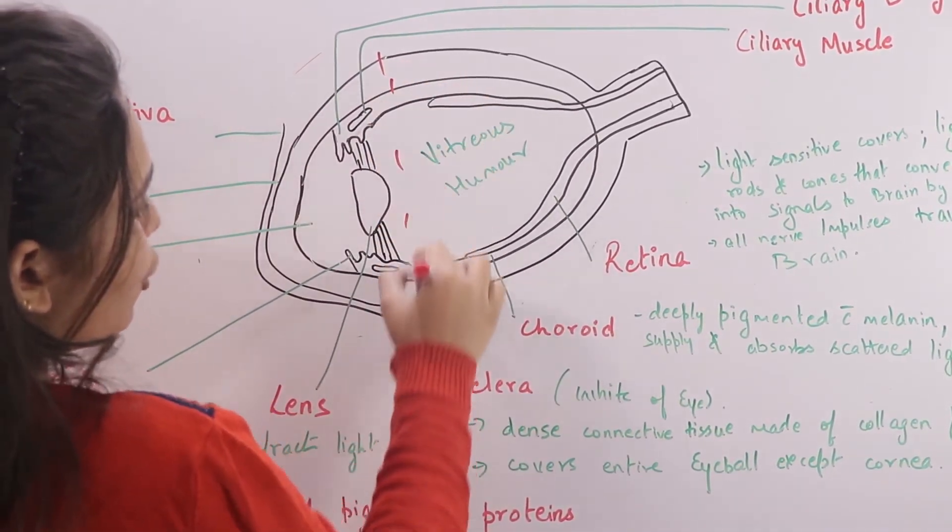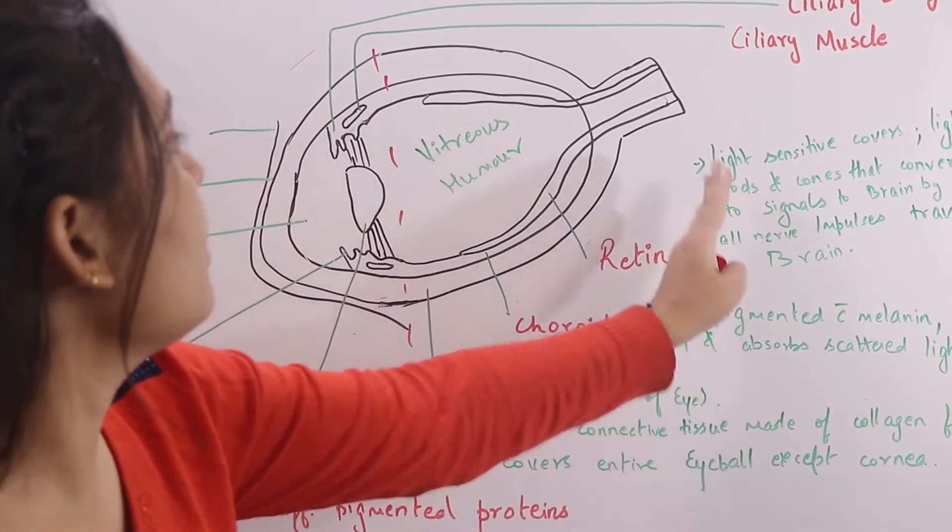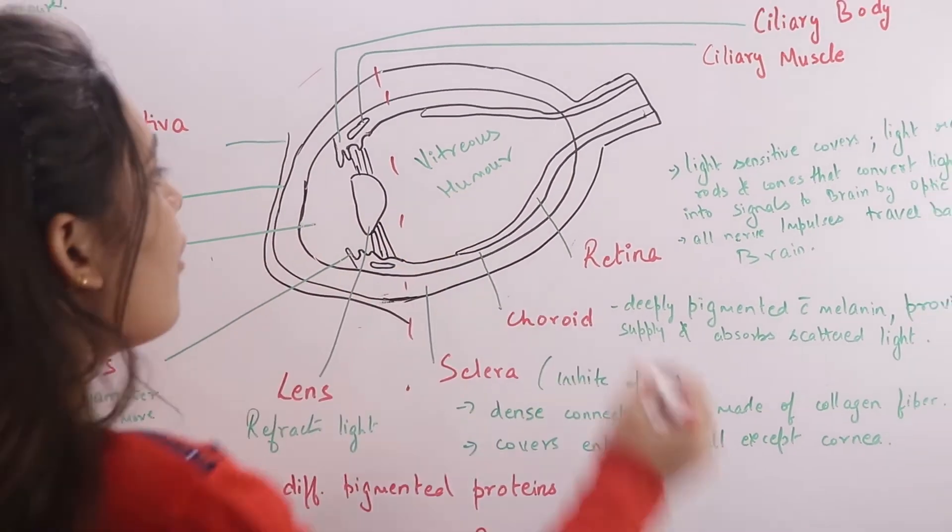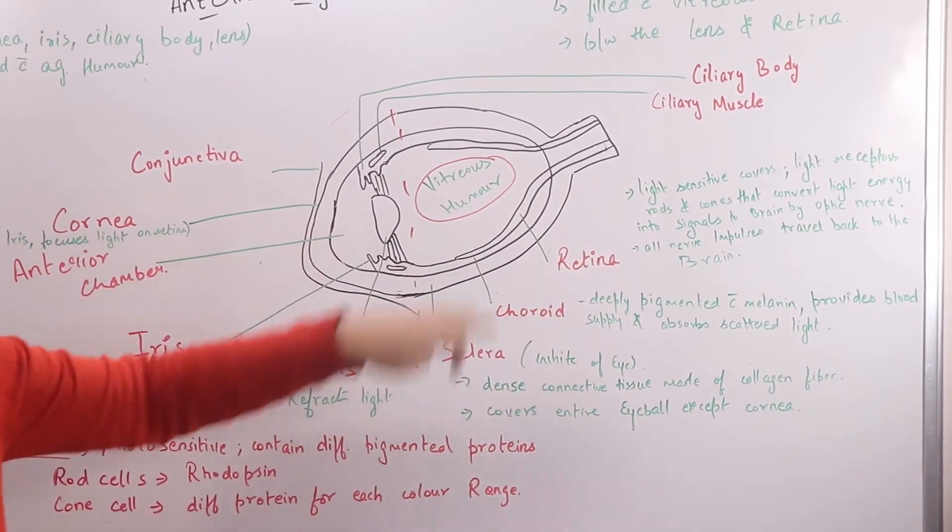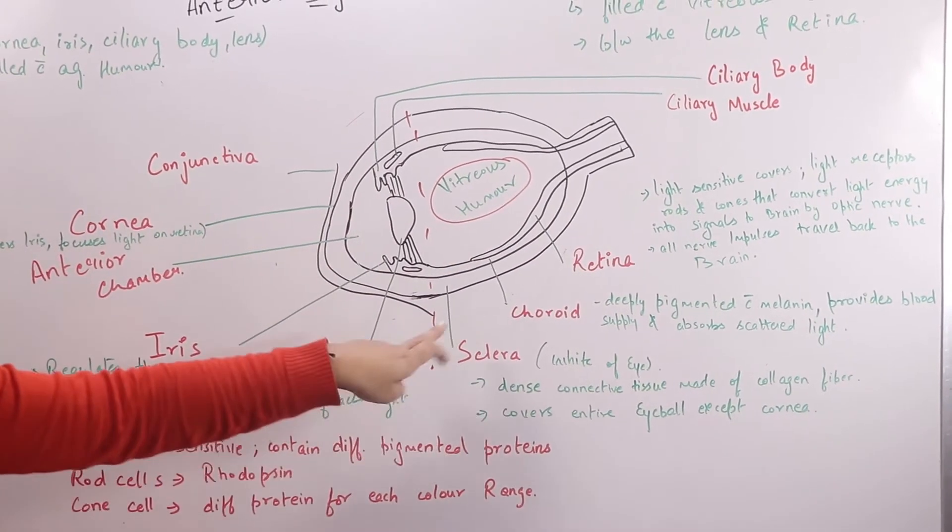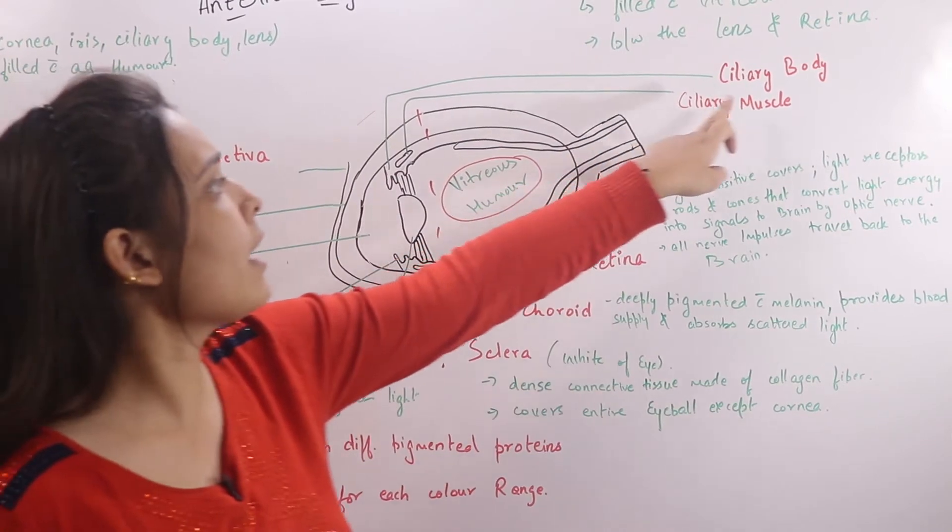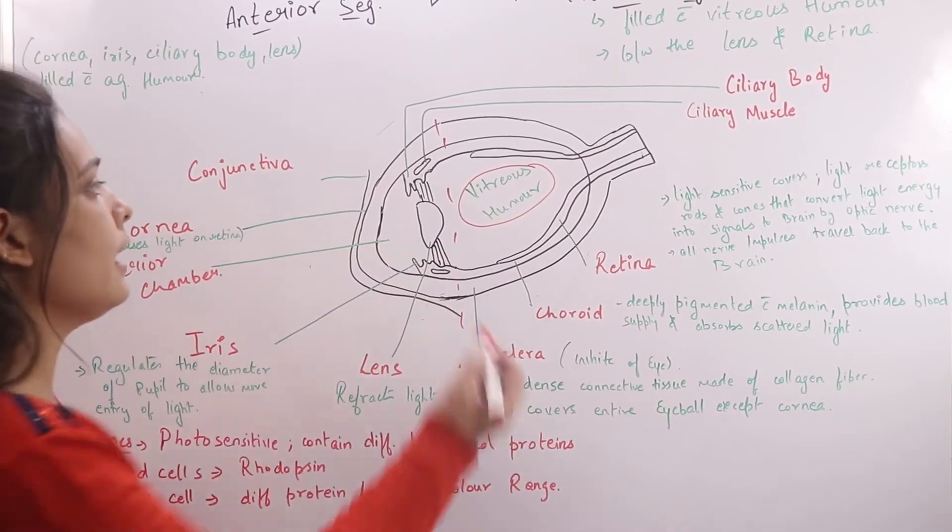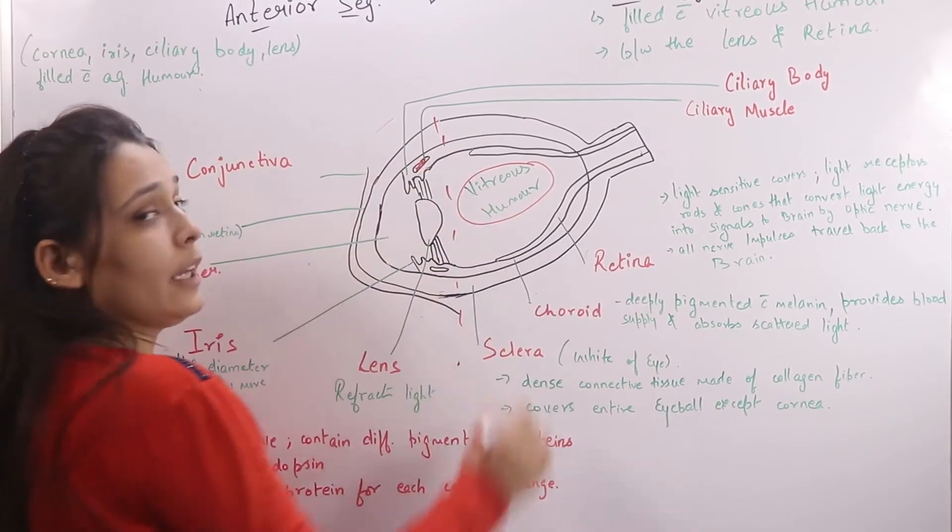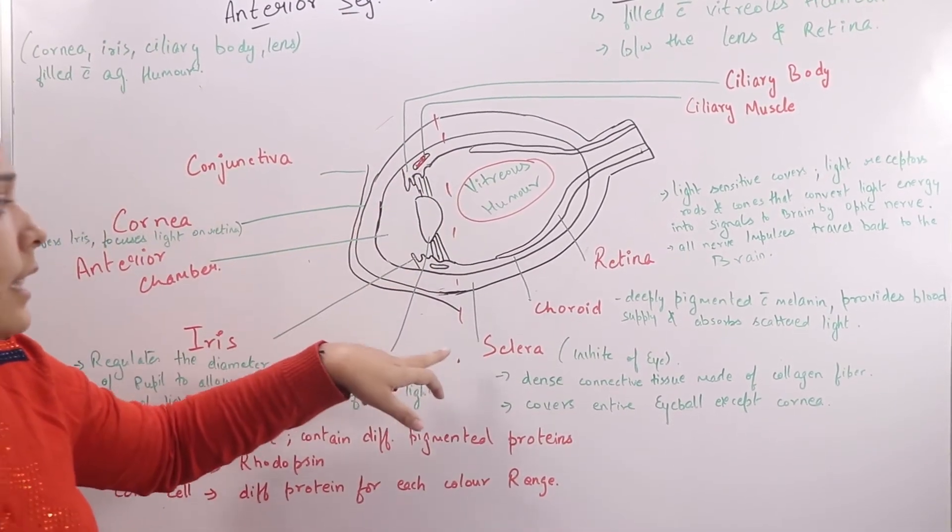Now the posterior segment, what is filled in this layer? It is vitreous humor. This entire area contains vitreous humor. First, these ciliary bodies are present here, these ciliary muscles.